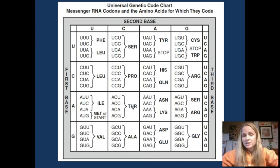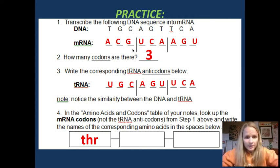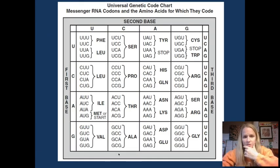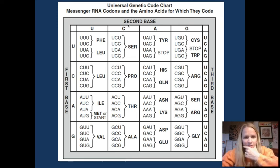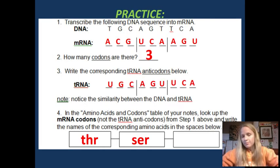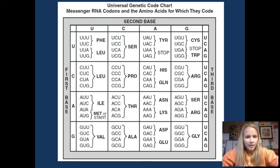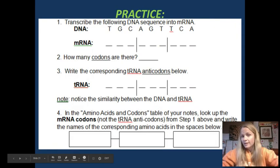My first one, I'm expecting it to be THR — threonine. Let me see if I got it right. Yep, threonine. My next one is UCA. UCA — UCA is serine. And then my last one, going off the messenger RNA, is A, G, U. So I go back and — A, G, U — another serine. Even though it's different letters, they code for the same thing.